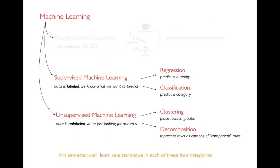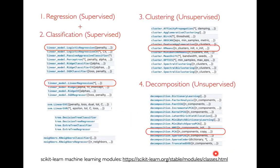That's a whirlwind tour of four problems: regression and classification, which are both supervised because the data is labeled; and clustering and decomposition, which are unsupervised because there's no column we're trying to predict. For each of these four problems, there are tons of different algorithms. In this semester we won't have time to learn them all — this is the Scikit-learn website, which probably has close to hundreds of different algorithms or classes. For clustering we're going to learn k-means clustering. For decomposition we're going to learn PCA.